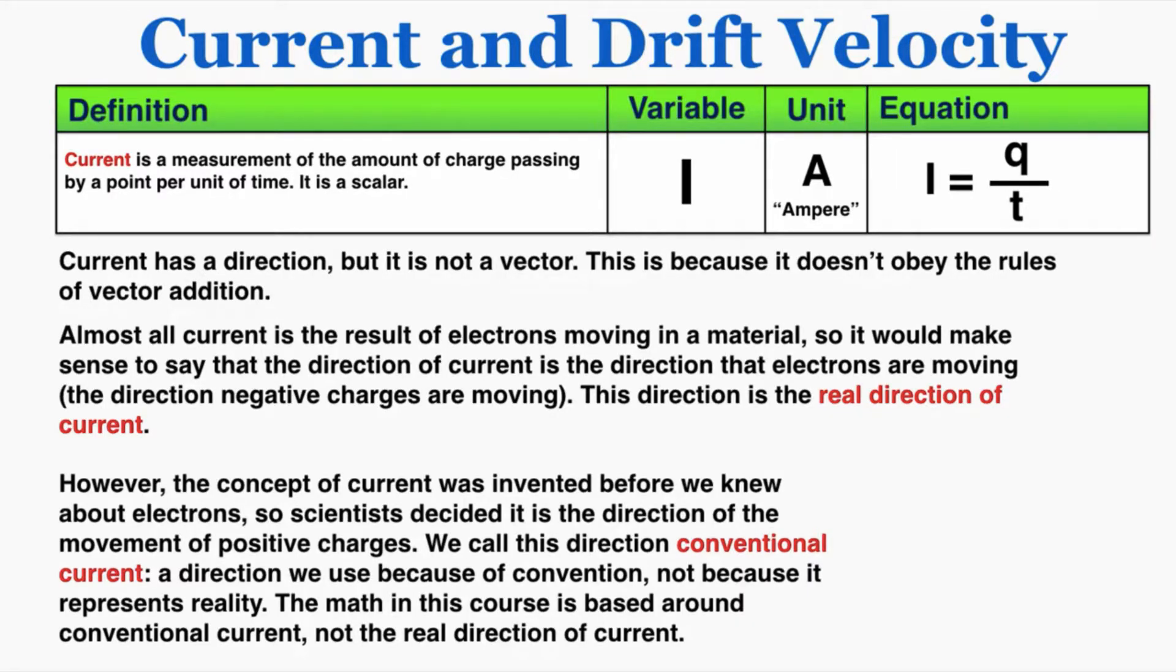We call this direction the conventional current, a direction we use because of convention, not because it represents reality. The math in this course is based around conventional current, not the real direction of current. So whenever you see current symbolized as moving a certain way, you'll know that secretly the electrons are actually moving in the opposite direction. But because of convention and because we've set all the other math up to work with that conventional current, we're going to pretend it points in that direction.